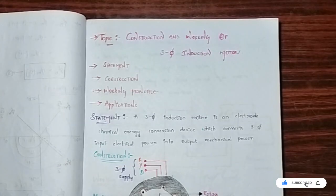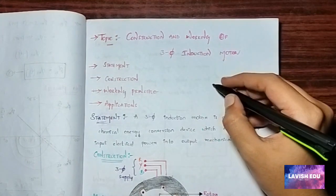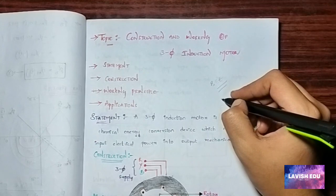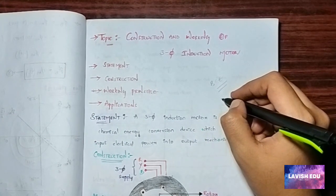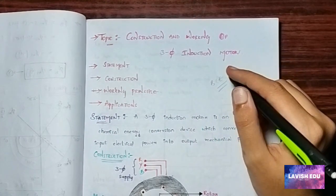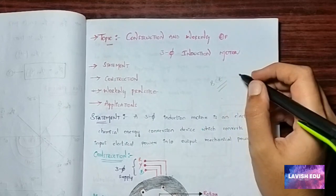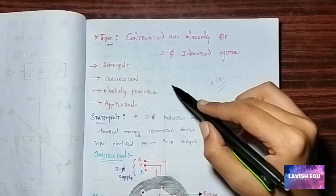Welcome to my channel. Today I'm going to tell you about the construction and working of the three-phase induction motor, which is a very important topic in basic electronic engineering, chapter four: electrical installations. I've also uploaded videos on torque-slip characteristics, AC machines, and the generation of the rotating magnetic field. This is the fourth topic in PWE.